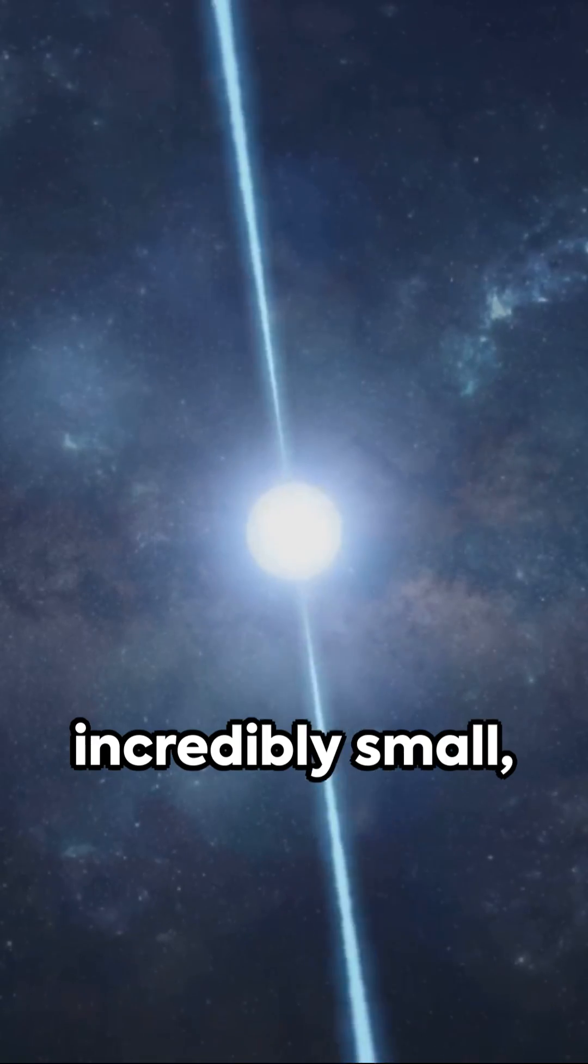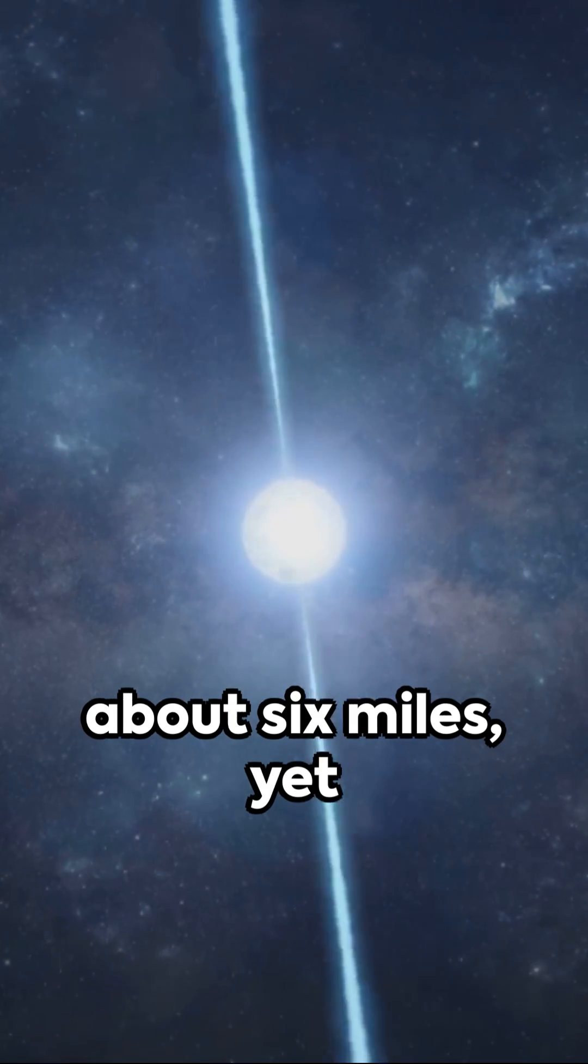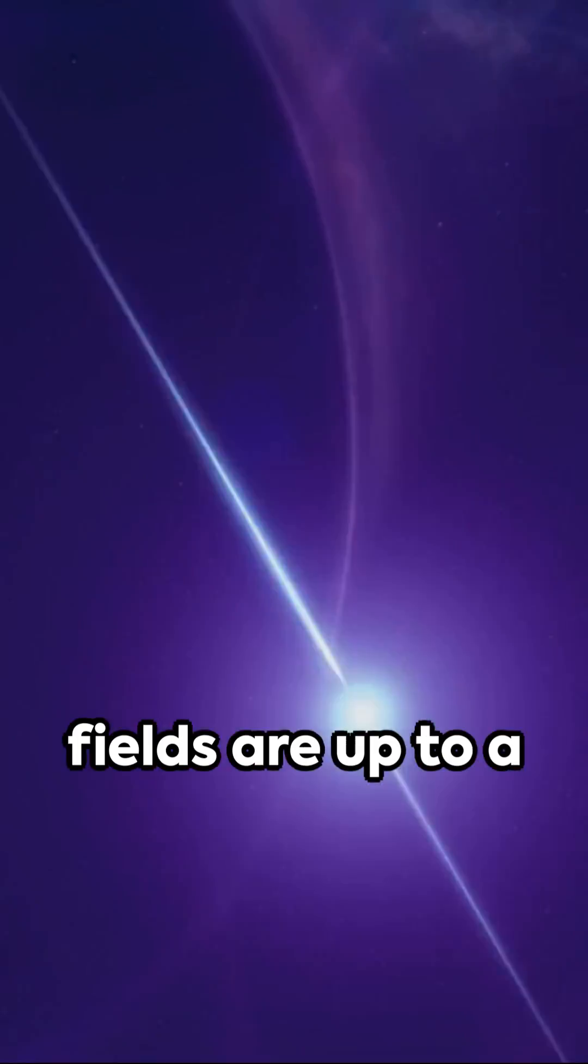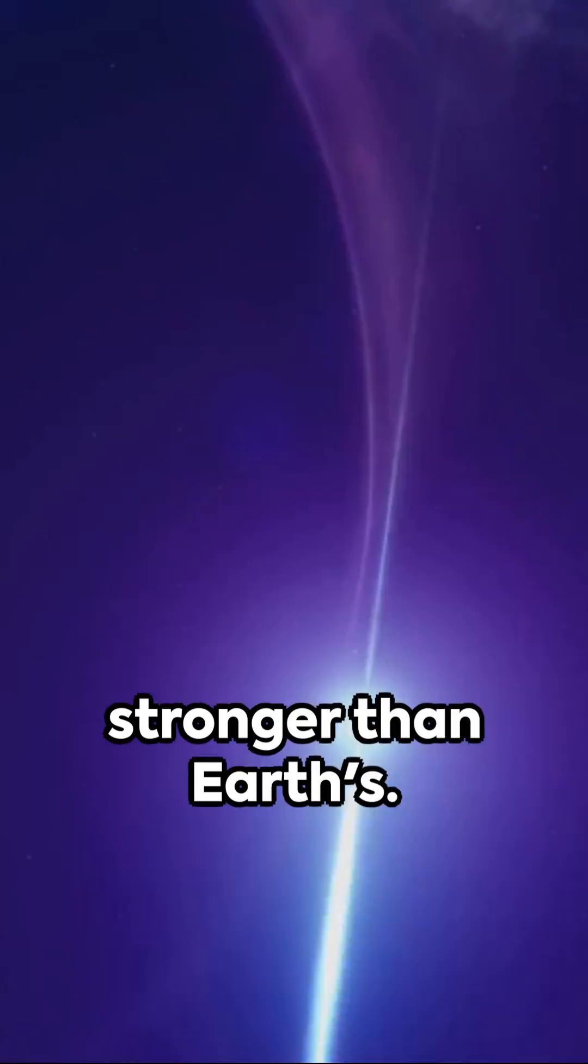Neutron stars are incredibly small, with a radius of just about 6 miles, yet they pack a mass greater than that of our sun. Their magnetic fields are up to a trillion times stronger than Earth's.